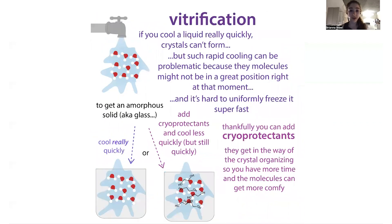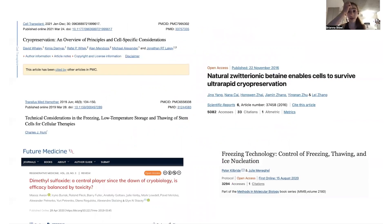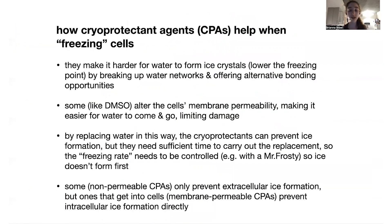This idea of vitrification means that your water molecules don't have enough energy — and the molecules around them don't have enough energy — to actually be doing stuff, metabolizing, and carrying out reactions that would change things inside the cell. Everything is kind of frozen in place; they don't have the energy to move around or carry out reactions, but they're not in that ice form. This is going to protect the cells in long-term storage. Now let's get into more of the details of how these cryoprotecting agents work.